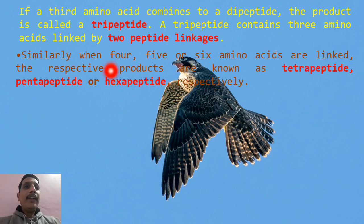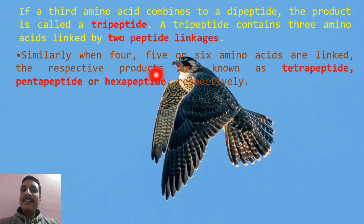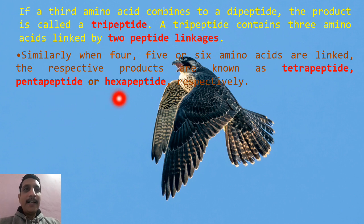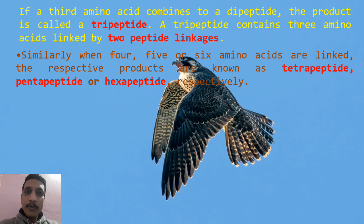When four, five, or six amino acids are linked together, the respective products are called tetrapeptide, pentapeptide, and hexapeptide. When many amino acids are linked — a polypeptide — that is nothing but a protein.